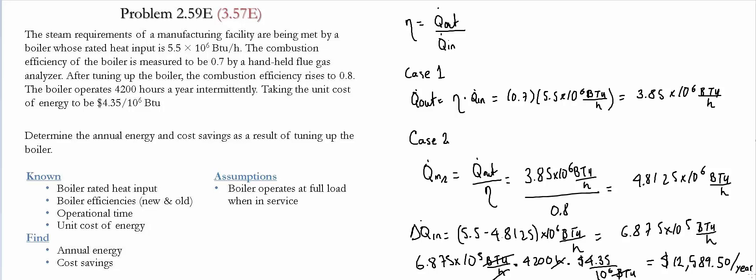So notice that to solve this problem, we were able to determine the rate of energy out, and it's exactly the same for the boiler before and after. We then calculated the energy in once it was tuned up, we calculated the difference between them, multiplied by how long it runs for and the cost, and that gives us the savings.